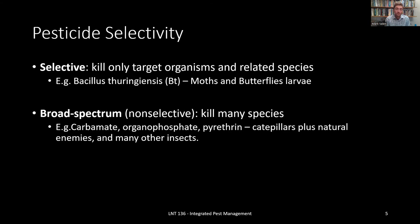And then we're considering pesticide selectivity. We have selective or broad spectrum pesticides. Selective pesticides are those that kill only the target organisms and related species. An example would be Bt, which is an organic pesticide that attacks moths and butterfly larvae. You can contrast that with a broad spectrum pesticide, otherwise known as non-selective, because that's one that will kill many species. Those would be chemicals that may kill the caterpillars that eat your plants, but would also potentially go after the natural enemies and many other insects. So we're always trying to be as selective as possible so that we only target the organism that's actually doing the damage.